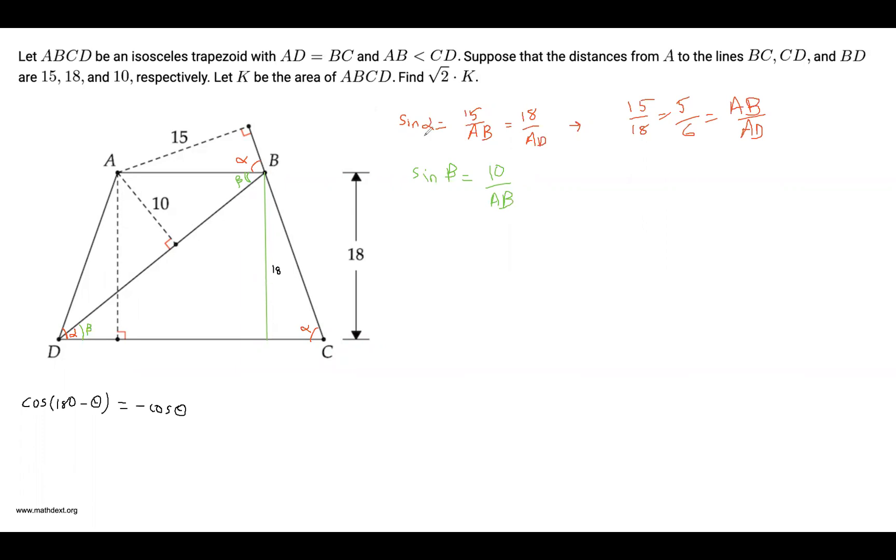So you're going to have 10 over 18, which is 5 over 9, equals AB over BD. And look what we've done here. We've got the ratio of AB to AD is 5 to 6. We've got the ratio of AB to BD as 5 to 9.